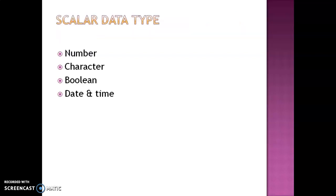PL/SQL scalar data types and subtypes are: numbers, characters, boolean, and date and time. Number is a numeric data type — numerical values on which arithmetic operations are performed. It can also have integers as a form of number data type. Characters are alphanumerical values that represent single characters or strings of characters. Boolean stores logical values on which logical operations are performed. Date and time represent dates and times.